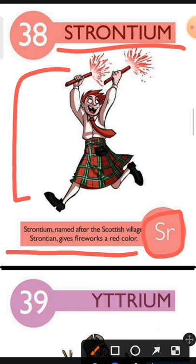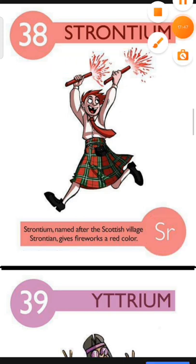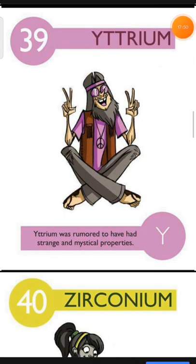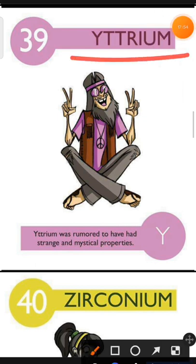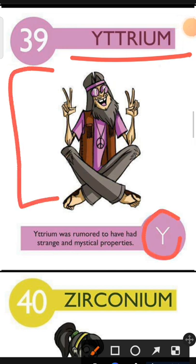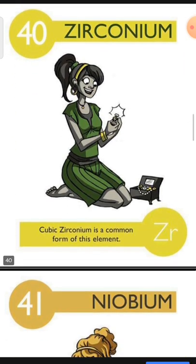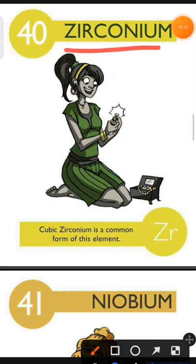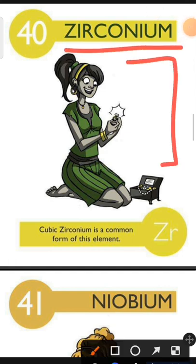Element number 39 is Yttrium. The characteristic of Yttrium is: Yttrium was rumored to have had strange and mystical properties. Element number 40 is Zirconium. The characteristic of Zirconium is: Cubic Zirconium is a common form of this element.